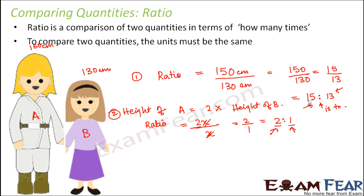Now one more interesting thing is that whenever you are trying to compare two quantities using ratios, their units must be the same. So you can never compare two different quantities with two different units.